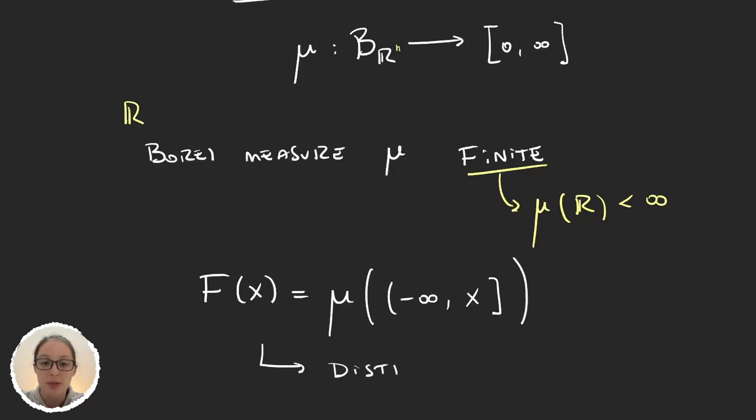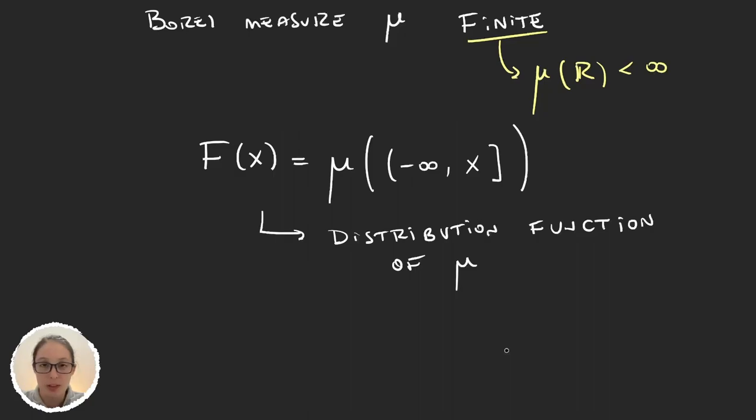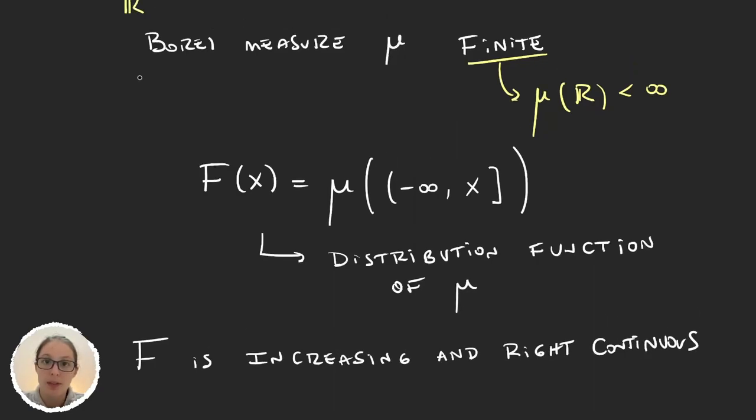Now fun fact, this function F is actually called the distribution function for the measure μ. That's a concept that comes from probability theory. So it can be proven, I'm not gonna prove it, but you can easily do it as an exercise, that this function F is increasing and right continuous. But now look at this.